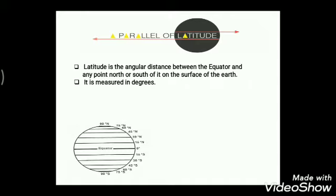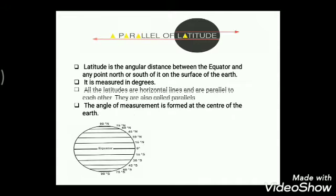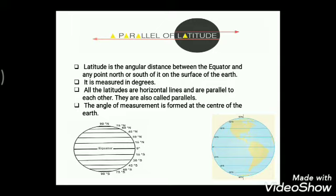The angle of measurement is formed at the center of the earth, where the equator lies, so from there all measurement starts. All the latitudes are horizontal lines and are parallel to each other, which is why they are also called parallels.